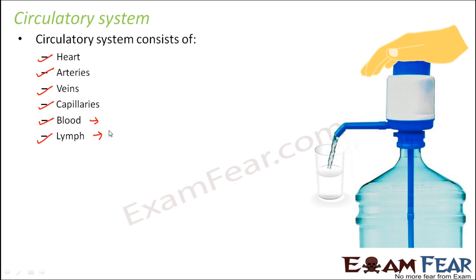Blood and lymph we already discussed. These are the body fluids which actually flow from one part to another, and along with them they carry all the materials that need to be transported. Now arteries, veins and capillaries are nothing but the blood vessels — that is, these are the tube-like structures which carry the fluid.